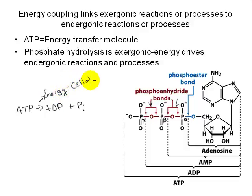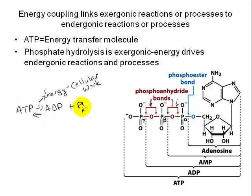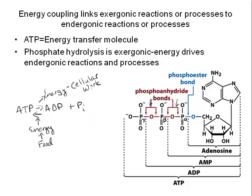If hydrolyzing phosphate off ATP is exergonic, what about the reverse — rebuilding ATP from ADP and phosphate? That obviously requires energy, and cells typically get that energy from organic compounds like glucose or fat molecules. These molecules hold lots of potential energy. By breaking them down in a controlled fashion, the energy is captured and used to synthesize ATP. Every cell has millions of ATP molecules that are constantly being recycled — hydrolyzed to provide energy, then put back together using energy acquired from the environment.